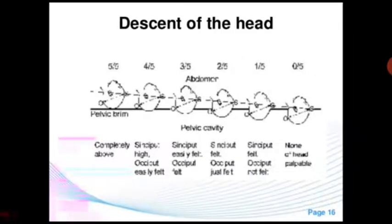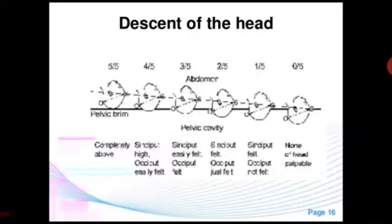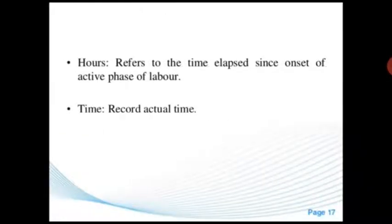Descent of the head findings: completely above the pelvic brim — occiput easily felt; occiput felt and partially in pelvis — occiput just felt; and head not palpable. Hours refers to the time elapsed since the onset of the active phase of labor, recorded as actual time.